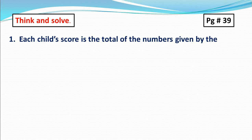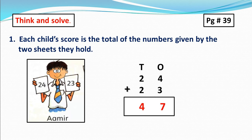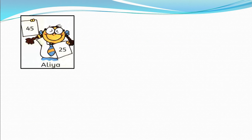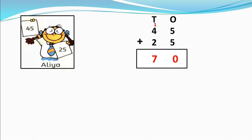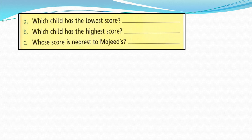Now I am going to do page number 39 — Think and Solve. Here we are going to do question number 1. Each child's score is the total of numbers given by the two sheets they hold. This is Aamir — he scored 24 and 23. What is the total score of Aamir? Aamir scored 47. This is Aaliyah — he scored 45 and 25. The total score of Aaliyah is 70. This is Majid — he scored 50 and 23, so his total score is 73. Now there are some questions. The first one is: Which child has the lowest score? Aamir has the lowest score.